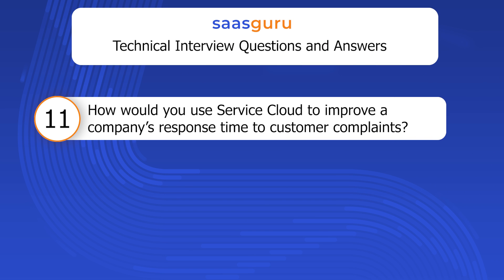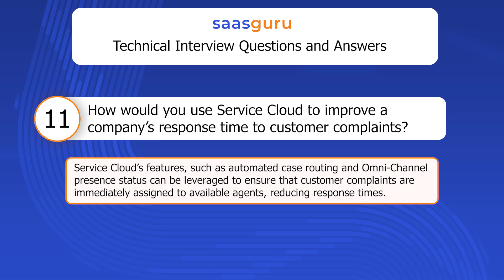Question 11: How would you use Service Cloud to improve a company's response time to customer complaints? Service Cloud's features, such as automated case routing and omni-channel presence status, can be leveraged to ensure that customer complaints are immediately assigned to available agents, reducing response times.